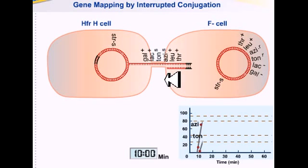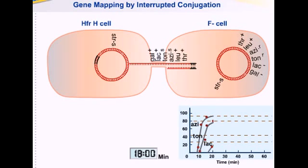If we start disrupting at 10 minutes, the second marker TonS has been transferred. This indicates that TonS lies close to the marker Azi, because Azi was first transferred after the F-factor. By 18 minutes after conjugation began, the third marker gene lac+ has been transferred to the F- cell. By 25 minutes after conjugation began, the fourth genetic marker gal+ (galactose-plus) has been transferred to the F- cell.